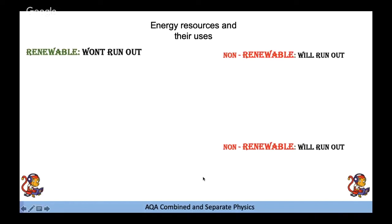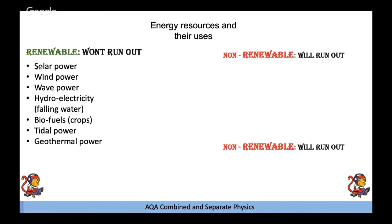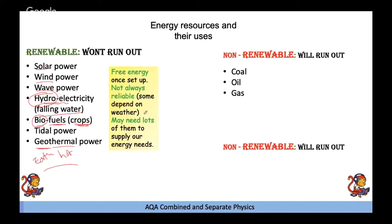Energy resources: renewable energies won't run out; non-renewable ones will. Renewable sources include: solar power, wind power, wave power, hydroelectricity (damming rivers), biofuels (from crops and wood), tidal power (tides based on the moon), and geothermal (hot rocks underground). Key points: once set up, renewable energy is essentially free; however, solar, wind, and wave are not always reliable as they depend on the weather.